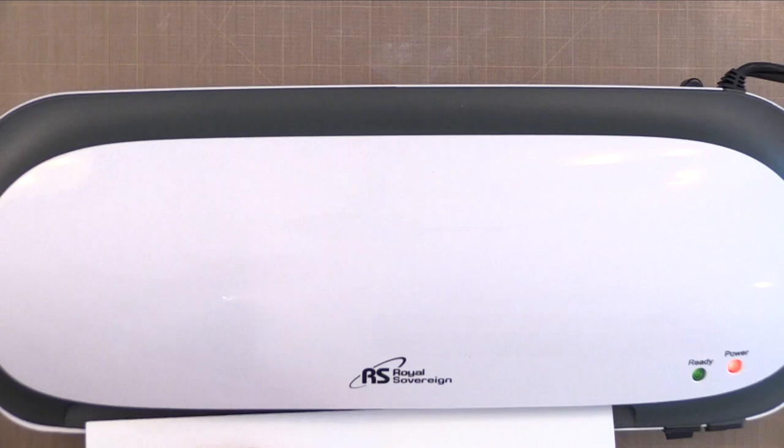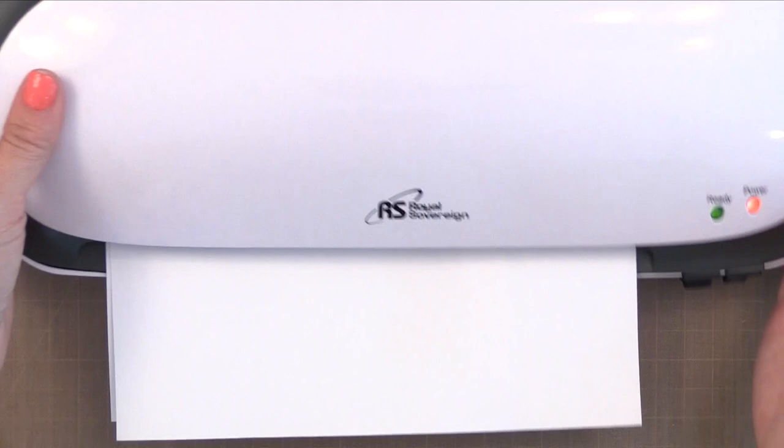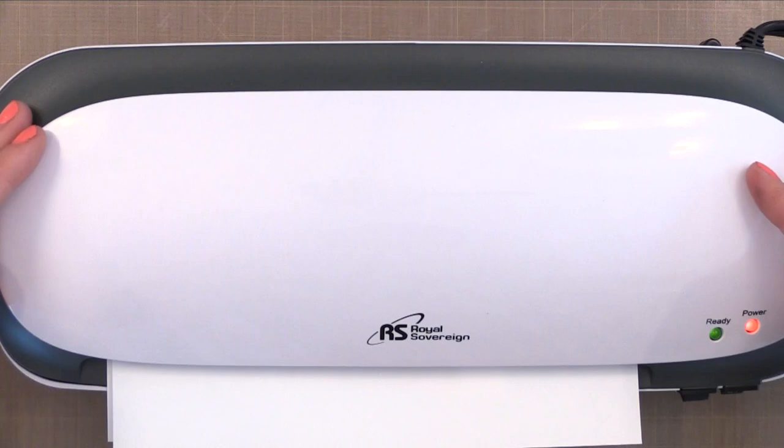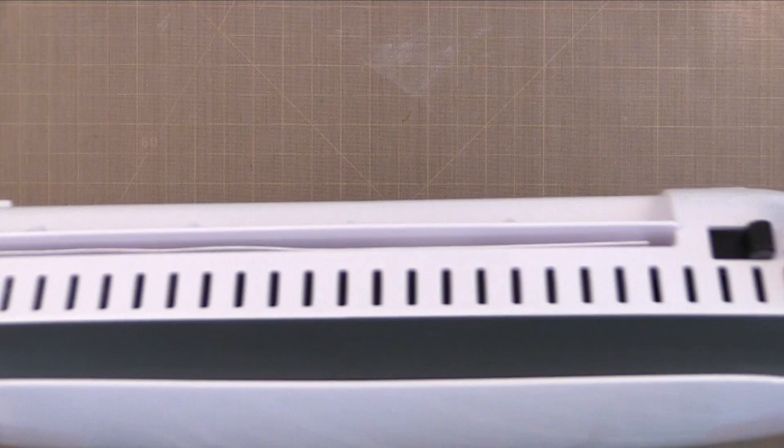Now this is the laminator that I'll be using today. Any laminator should work for this technique. I let it get really good and hot and I'm going to feed this through my laminator with the folded edge first so that it doesn't get caught in the laminator. As this feeds through it will add heat and pressure to the paper which causes the foil to stick to the embossing powder.